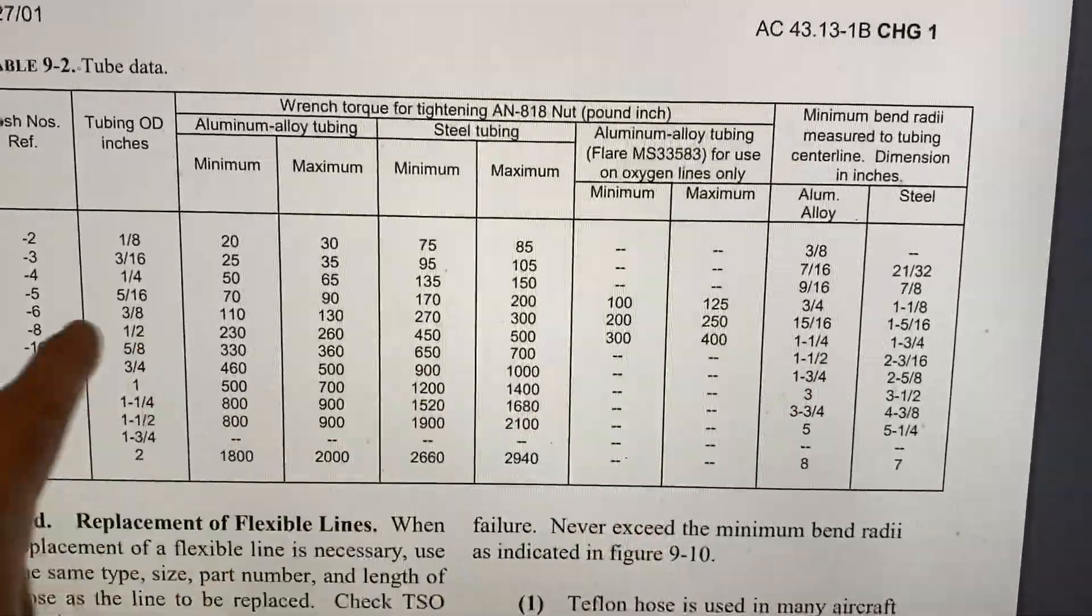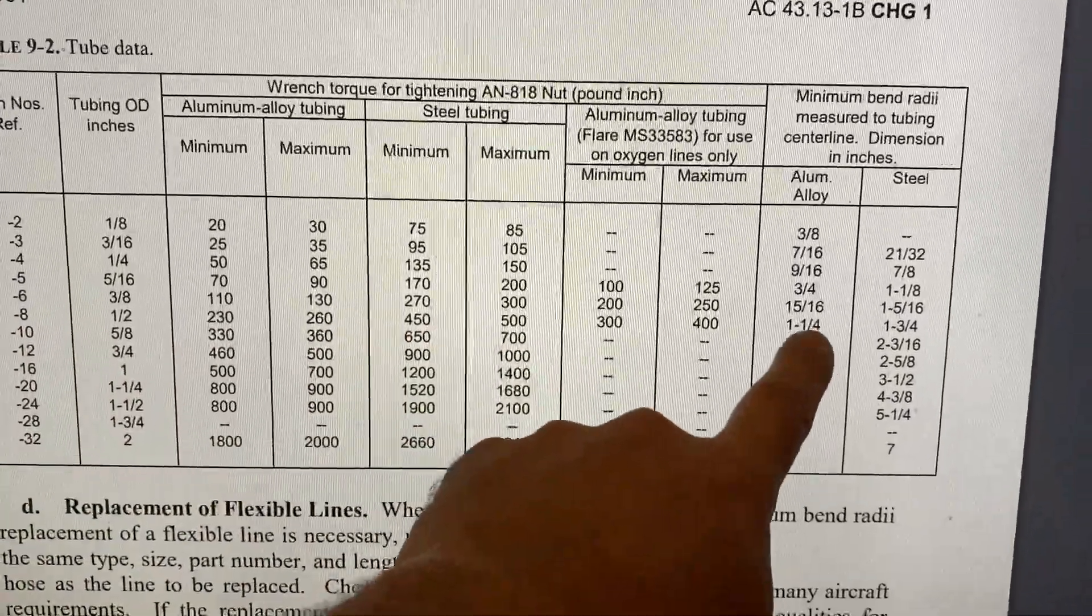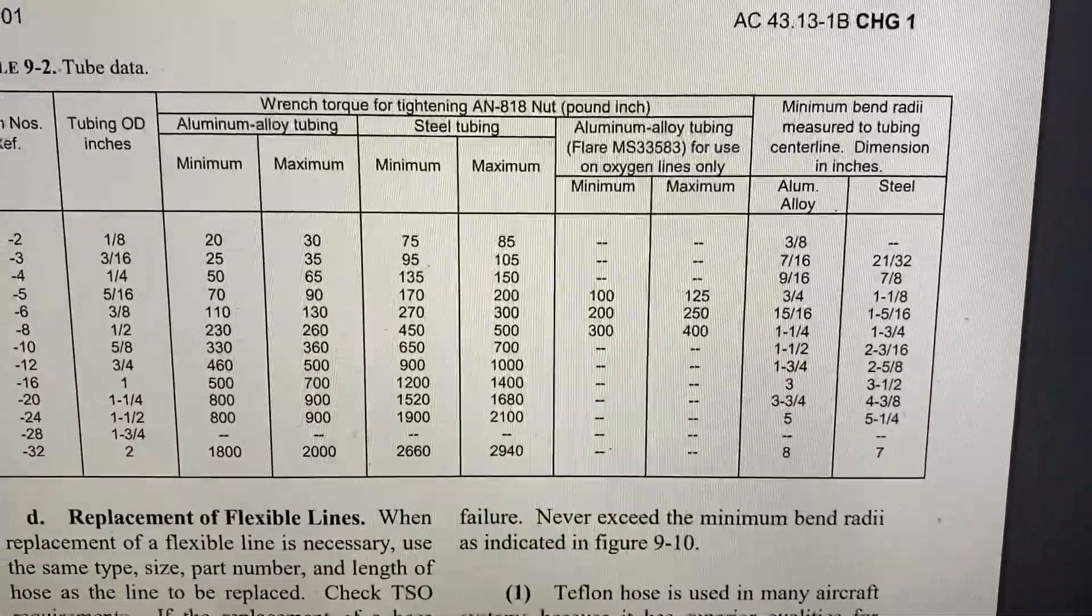So to answer this question, it would be very simple. The answer would be, I'd take the dash 8, I'd come all the way across, and the answer would be an inch and a quarter. But let's explain what that means.